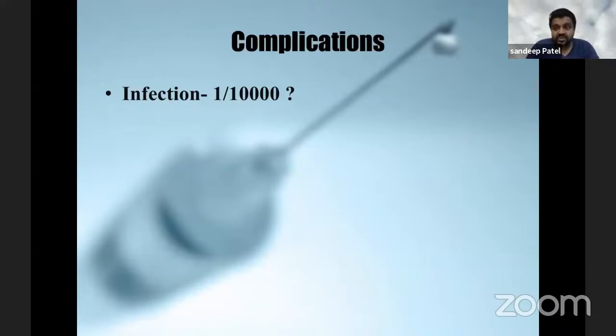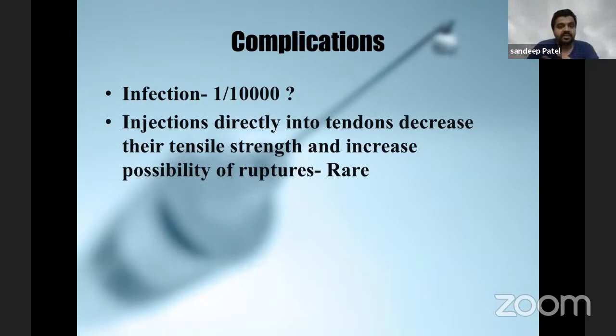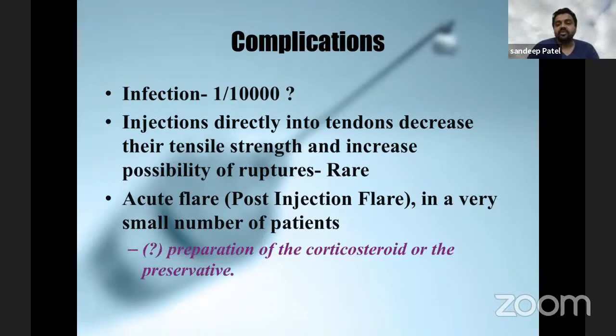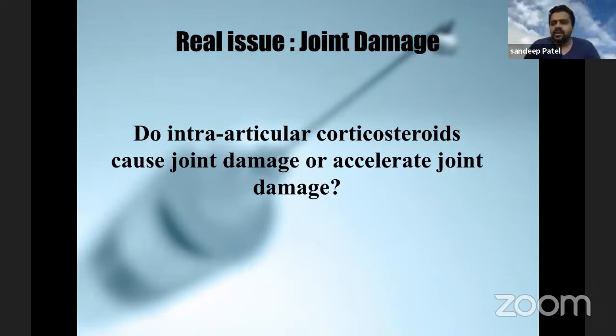Let's talk about complications. Infection is 1 in 10,000 - in 10,000 injections, it's 1, so this could be just by chance. Next, direct injections into the tendon decrease the tensile strength and increase the possibility of rupture - again, a very rare complication; if we have a good injection technique, this won't happen. Next is the acute flare - sometimes called the post-injection flare. It's not really because of the corticosteroid; it's because of the preservative or the preparation per se. But the real issue and controversy is: does it cause intra-articular damage? Does it accelerate joint damage?